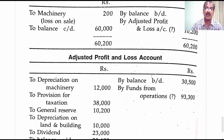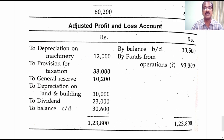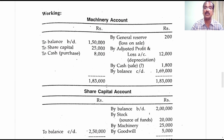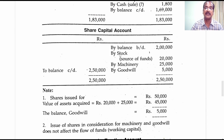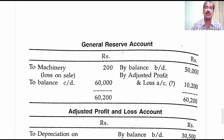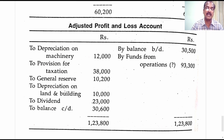Now let's prepare the adjusted profit and loss account. Being a credit item, the opening balance is written on the credit side — balance brought forward 30,500; balance carried forward 30,600. Going through the ledgers prepared, we pick up related items: adjusted PNL account debit to machinery for depreciation 12,000; adjusted PNL account debit to provision for taxation 38,000; adjusted PNL account debit to general reserve 10,200. We will then go through the liability side, asset side, and additional information before closing the adjusted PNL account.